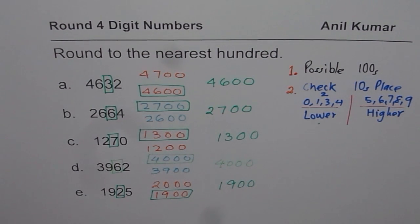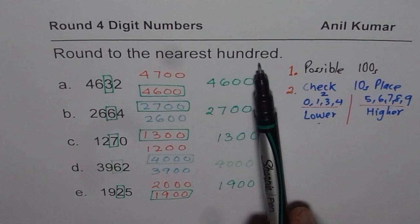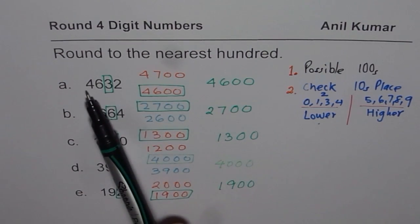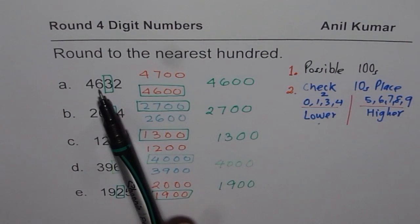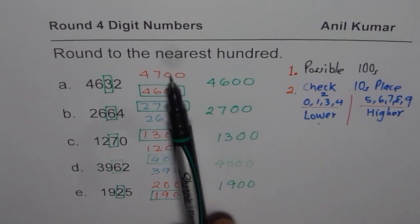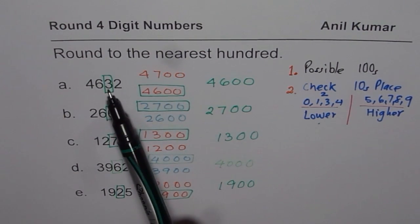So that is how the rounding should be done. Let me summarize this. Whenever you are rounding to nearest hundred, find the possible answers. That means closest hundreds. 4,632 is between 4,600 and 4,700. Two options we have. Which one to select? Check the numbers in tens place. Right side of hundred is tens place.